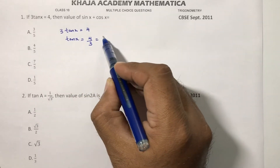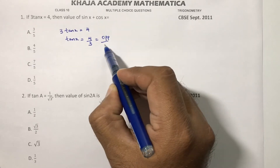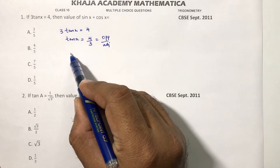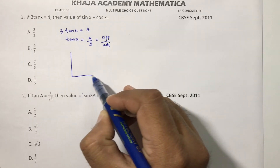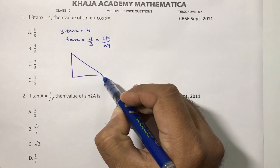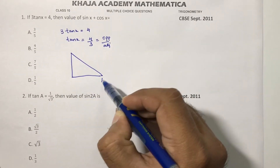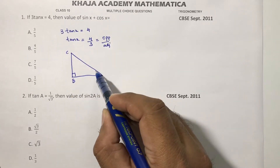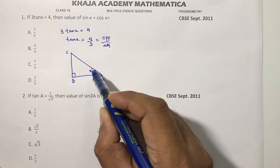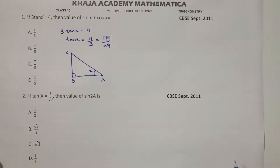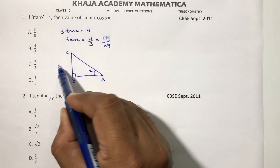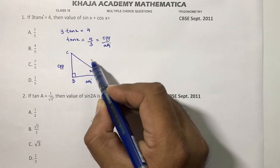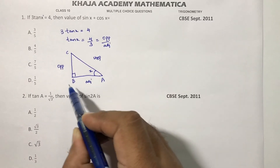The tan theta ratio is opposite by adjacent. So now draw a right angle triangle — you can take any right angle triangle, A, B, and C. Instead of theta, take x because tan x equals the ratio. Opposite is BC and adjacent is AB, and AC is the hypotenuse.